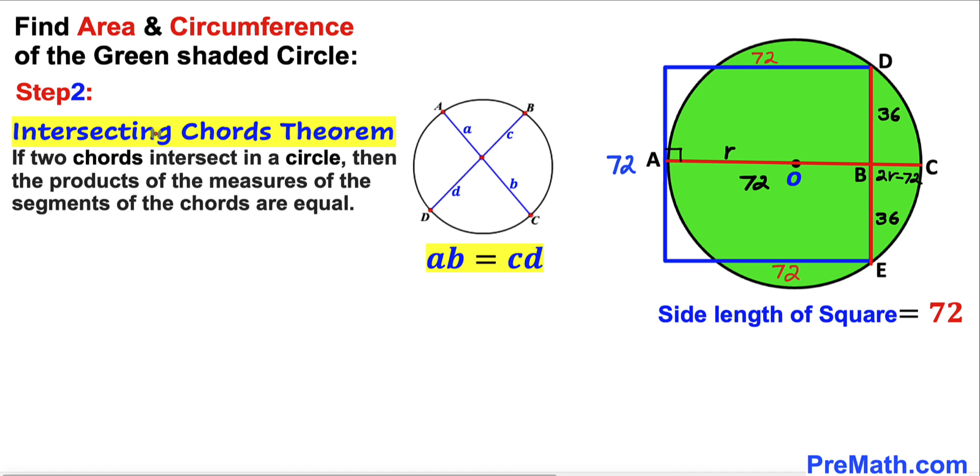So therefore we are going to recall intersecting chords theorem. If two chords intersecting in a circle then the product of the measures of the segments of the chords are equal. In other words this A times B is going to be C times D as you can see over here.